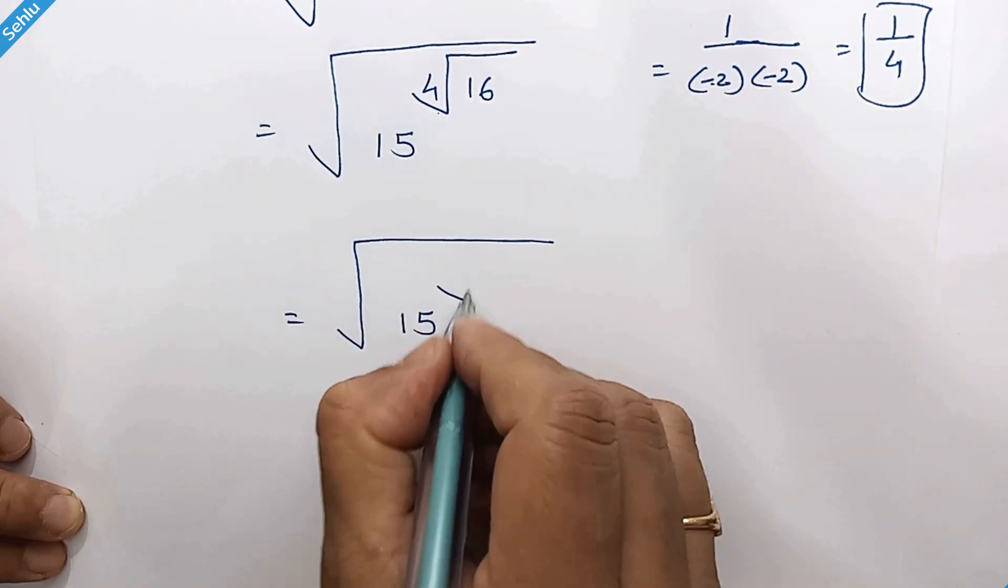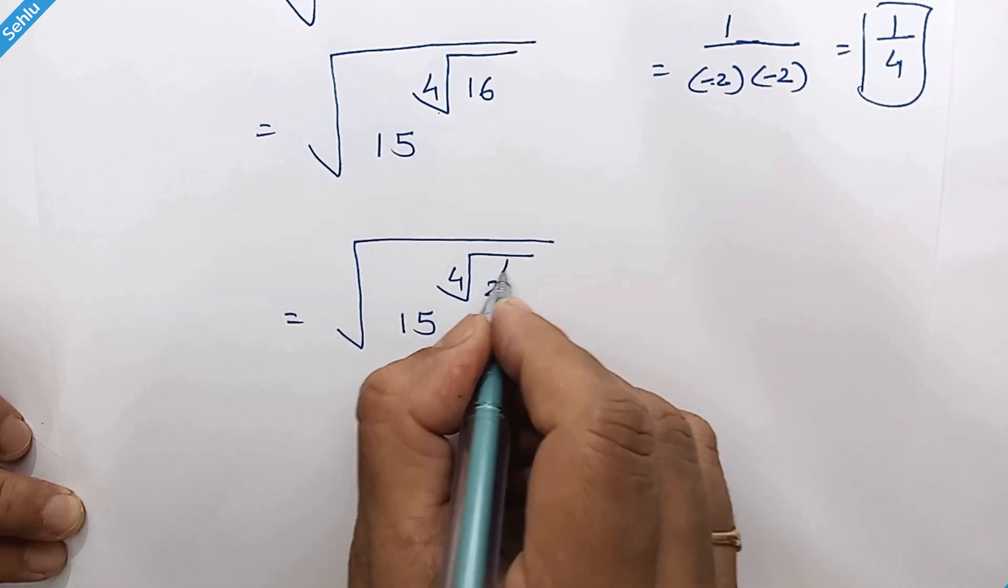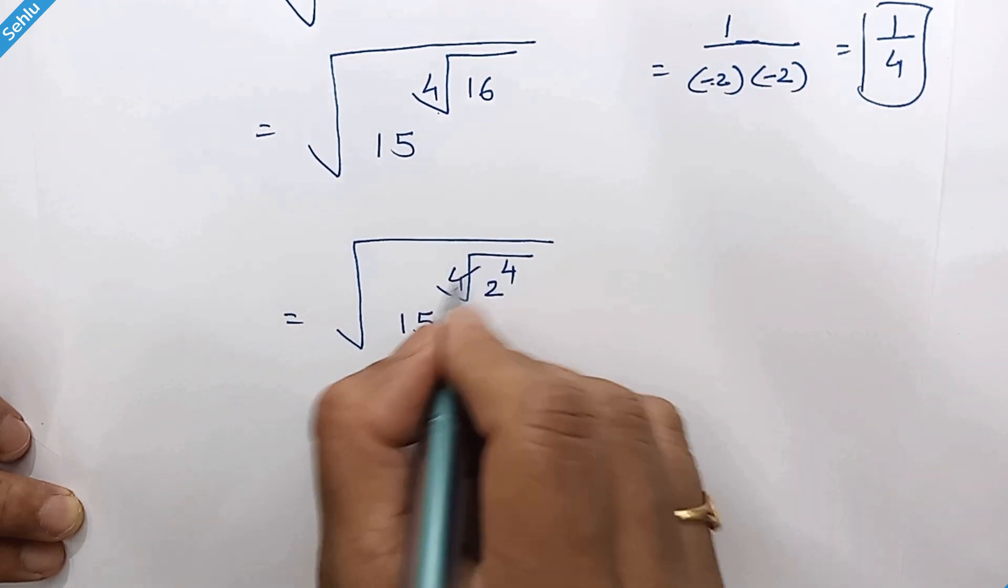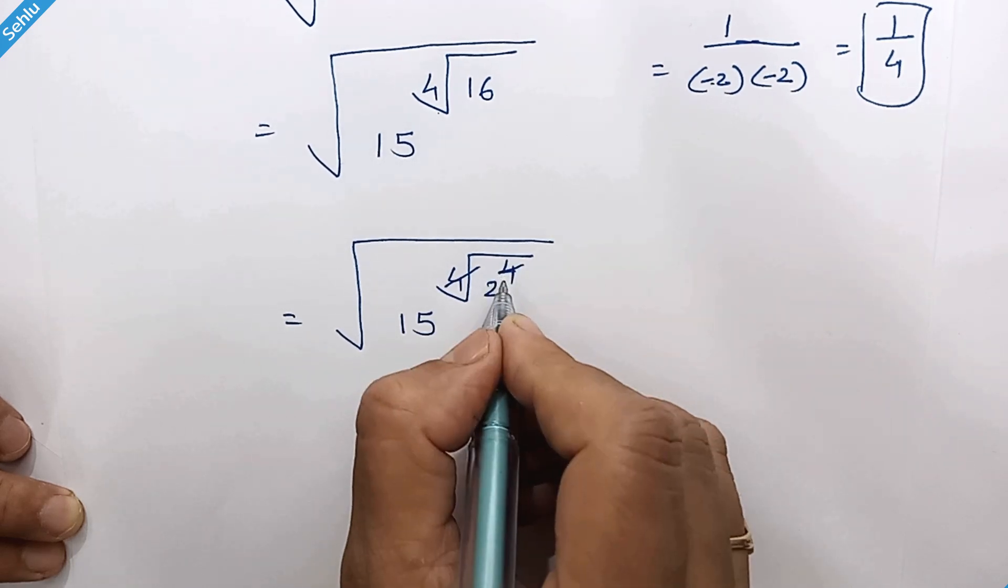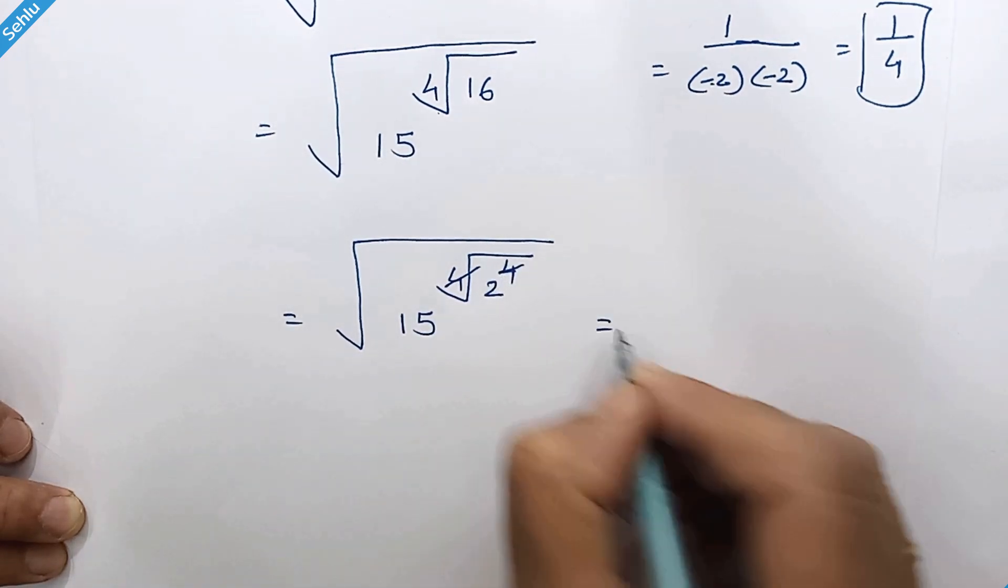16 is 2 to the power 4. So the 4th root and the exponent 4 will cancel each other.